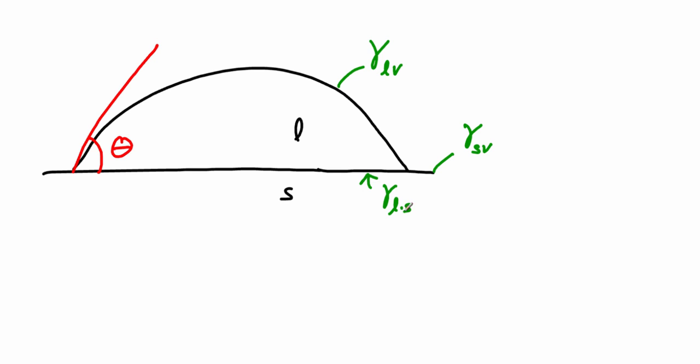And if we imagine just zooming in on this intersection where all three phases meet, we can draw a force diagram. So we're just going to zoom in on that intersection here. So we have surface tension of liquid and vapor, the surface tension of liquid and solid, and the surface tension of solid and vapor. And each of these, since they're tensions, are going to be pulling away from that three phase intersection point.